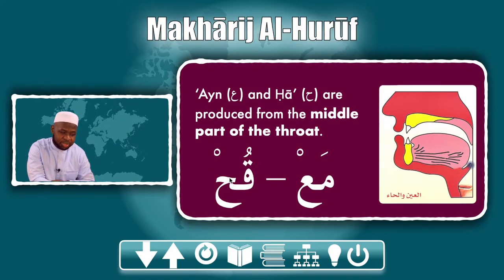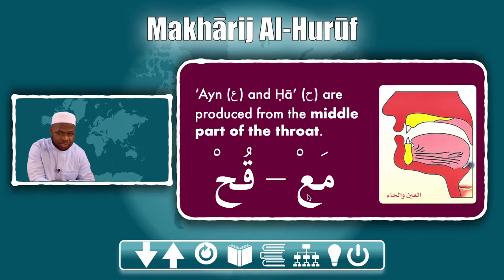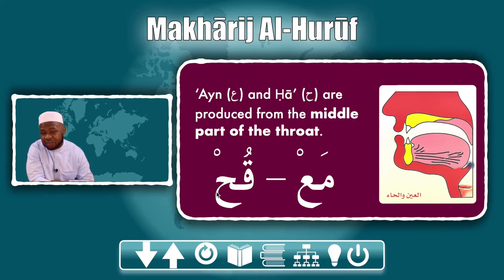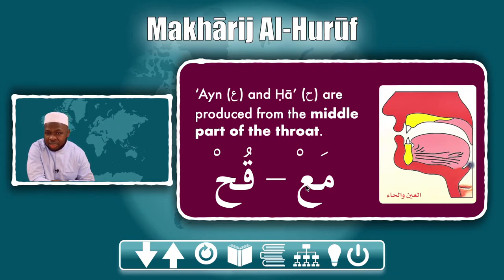The difference between ʿayn and hā when it comes to articulation point is that the ʿayn does not have hams, and the hā does have hams as part of its characteristics — its sifat. So ʿayn is one of those letters that some of us who are not Arabs and not native speakers of the Arabic language may have trouble with.